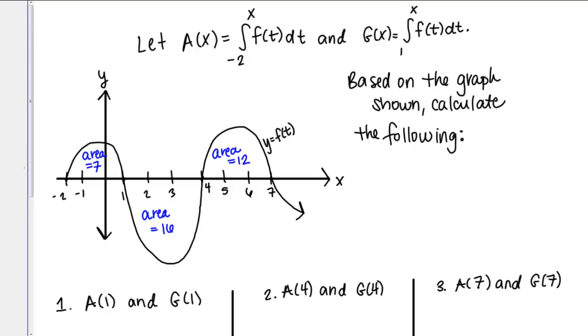Let's work through an example that involves using area functions to find the area of various regions. Here we're given two area functions. It says let A of X equal the integral from negative 2 to X of F of T DT and G of X equal the integral from 1 to X of F of T DT.